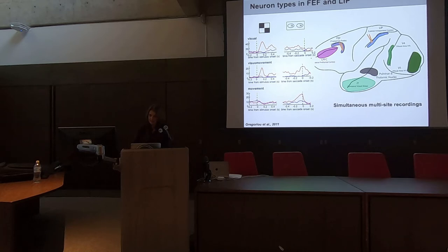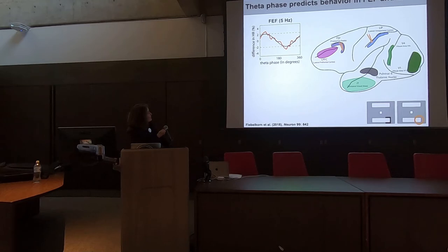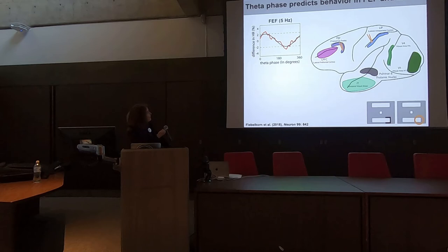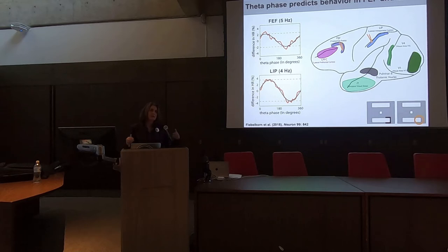I will show you a few data on that. The first thing we needed to establish in our monkey recordings was that there are phase-detection relationships like those we saw in the human brain — and that is the case. Theta phase here predicts behavior: in the frontal eye fields at 5 Hz, there is a phase where behavior is about 4% better than at the poor phase. We see similar relationships in LIP, and also in the thalamus and area V4 where we have recorded. So this theta rhythm seems to go across the entire network and orchestrates behavior by setting up these phase-detection relationships.